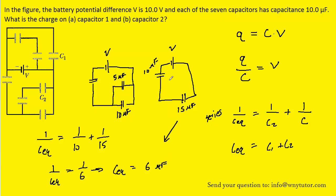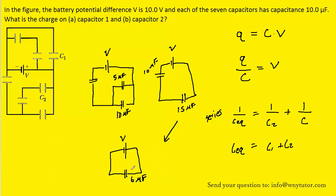We redraw the circuit with those two capacitors combined into the 6 microfarad equivalent. Now that the circuit is simplified to a single capacitor, we calculate the total charge by taking the capacitance of 6 microfarads and multiplying by the potential difference supplied by the battery, which is 10 volts. We work that out to get 60 microcoulombs — the charge on this equivalent capacitor.